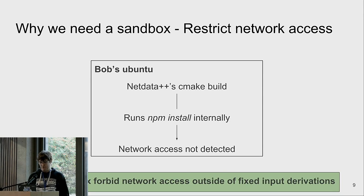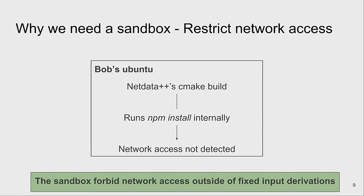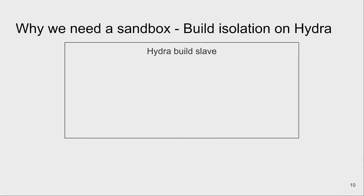We do allow network access for a specific build type called a fixed-output derivation. And one thing that might not be obvious at first is that the sandbox also helps when we have CI builds on big machines running many builds in parallel.